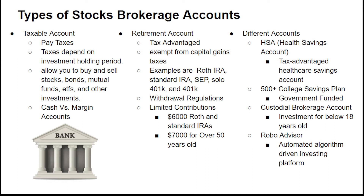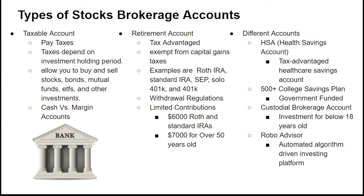Apart from taxable accounts, there are also retirement accounts, which have the added benefit of being tax-favored. Investments in these accounts are exempt from capital gains taxes, which lowers the amount of taxes you must pay. Generally, the government wants you to be able to retire with money, so they give us these truly tax-advantaged retirement accounts. The Roth IRA, Standard IRA, SEP, Solo 401k, and 401k are all examples of retirement accounts.